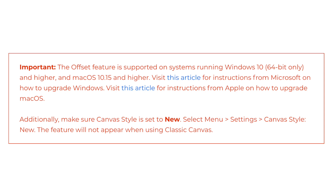Another reason could be that you are using a computer with a system that doesn't support this feature. This notice is from the Cricut side. The Offset feature is supported on systems running Windows 10 64-bit and higher, and macOS 10.15 and higher. Additionally, make sure canvas style is set to new.